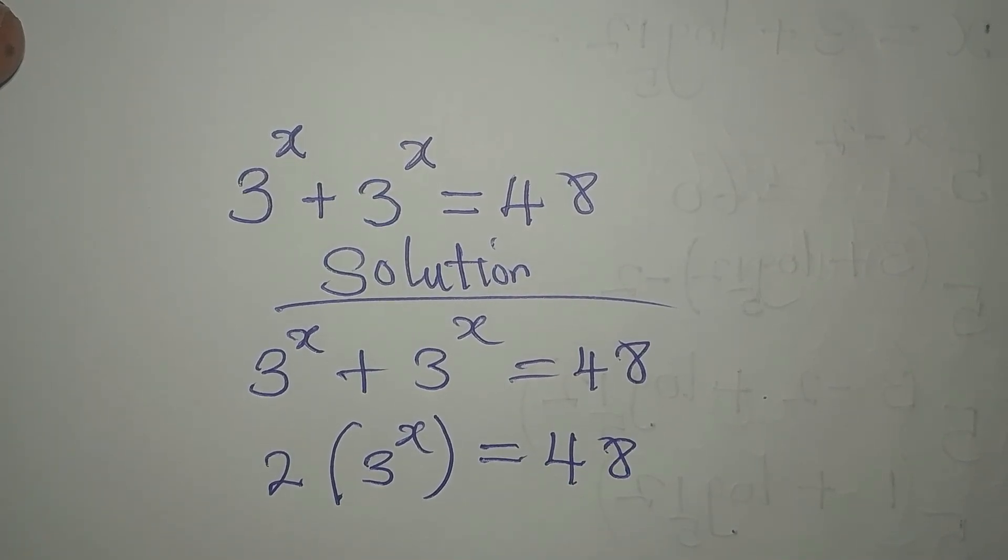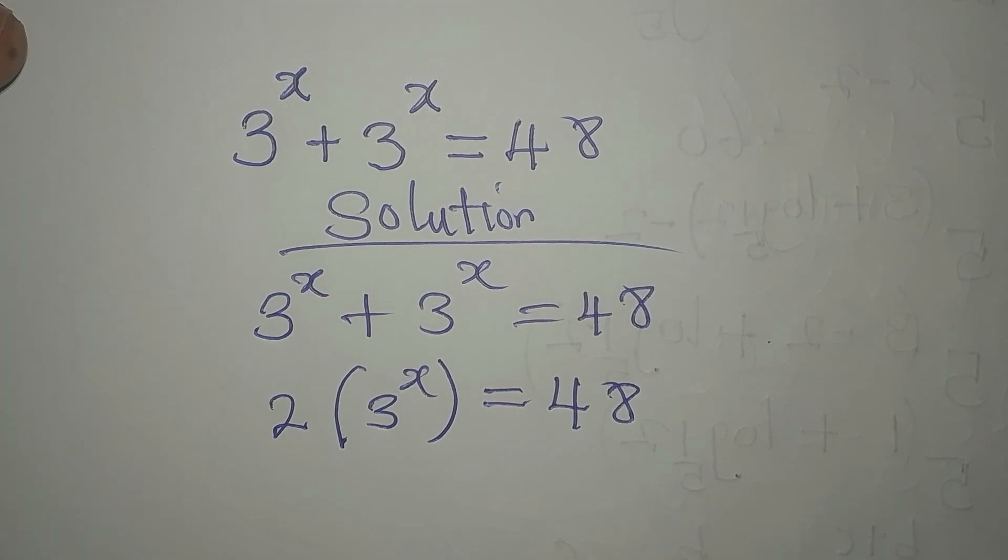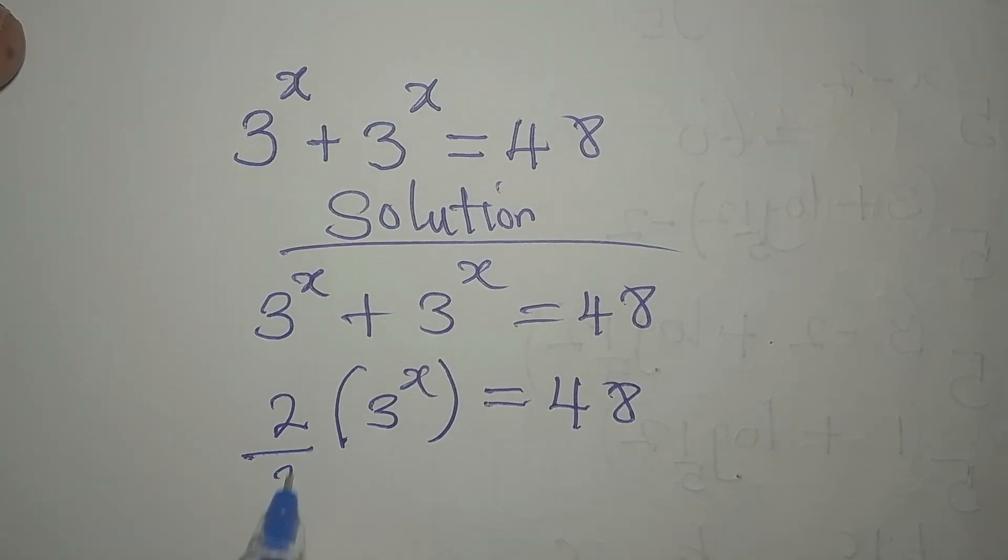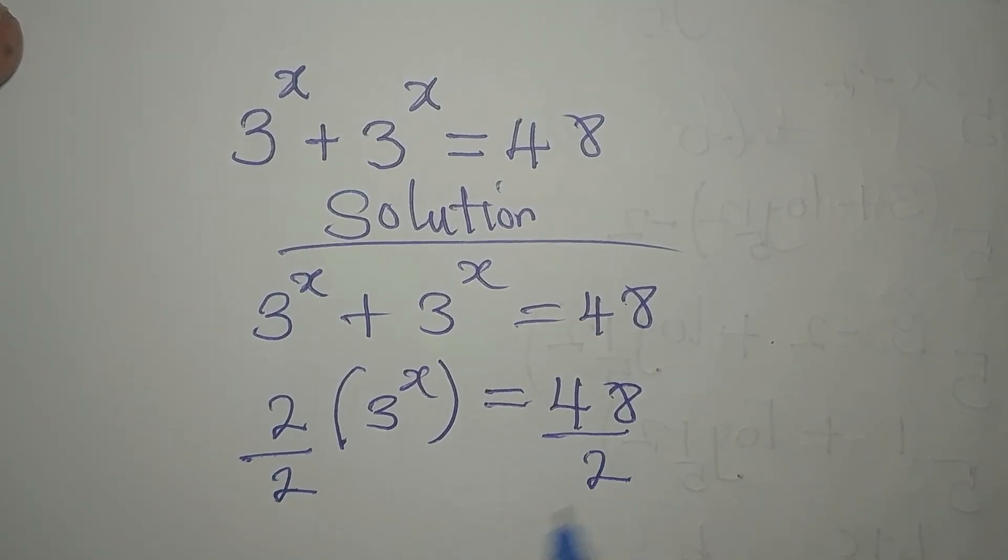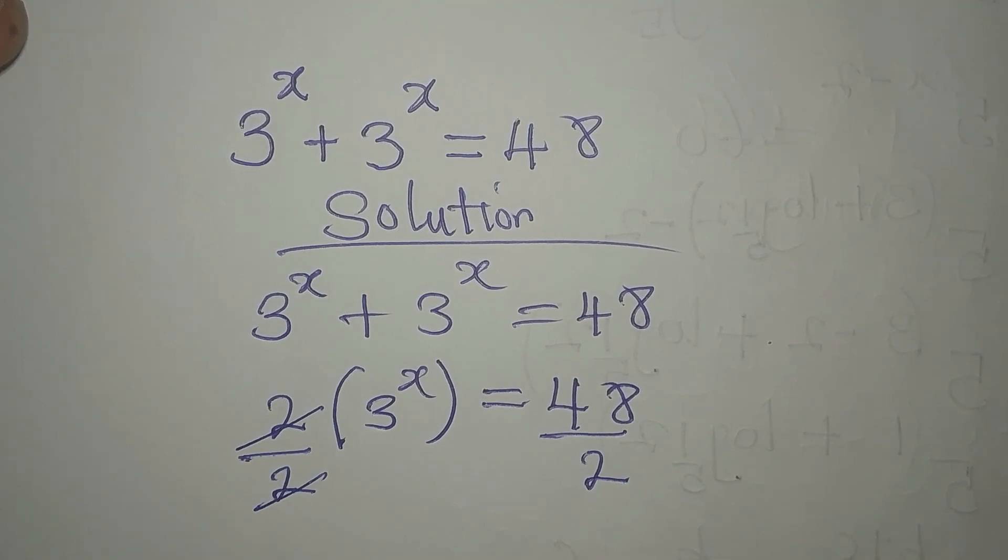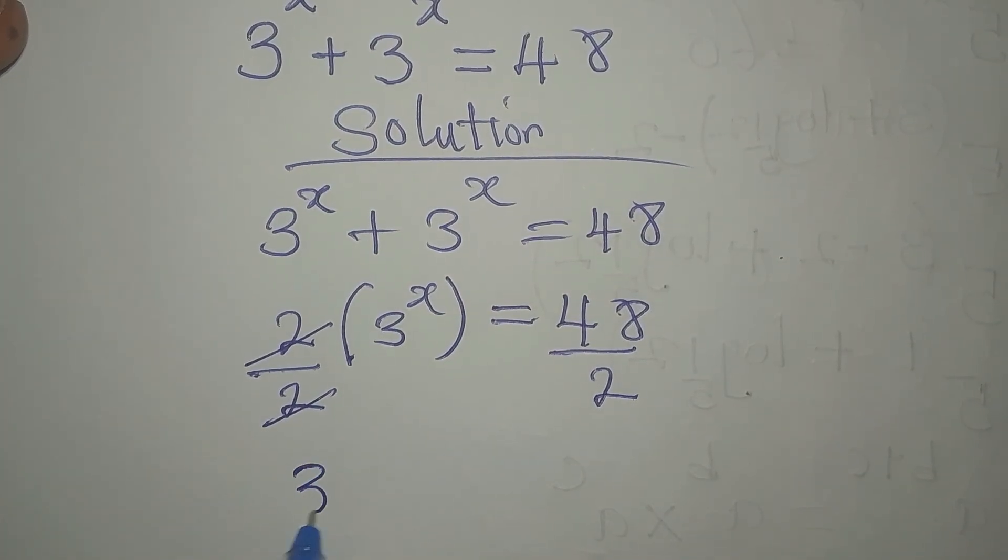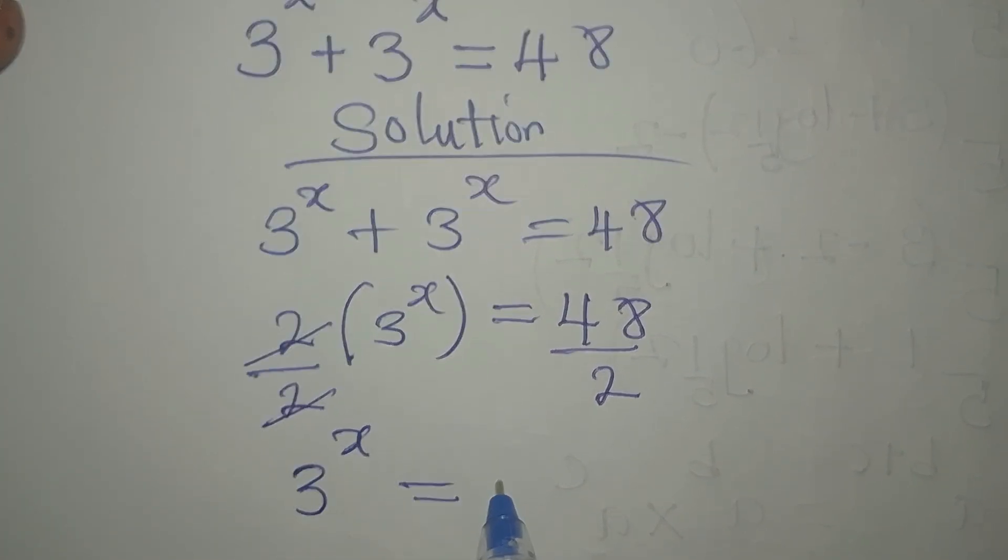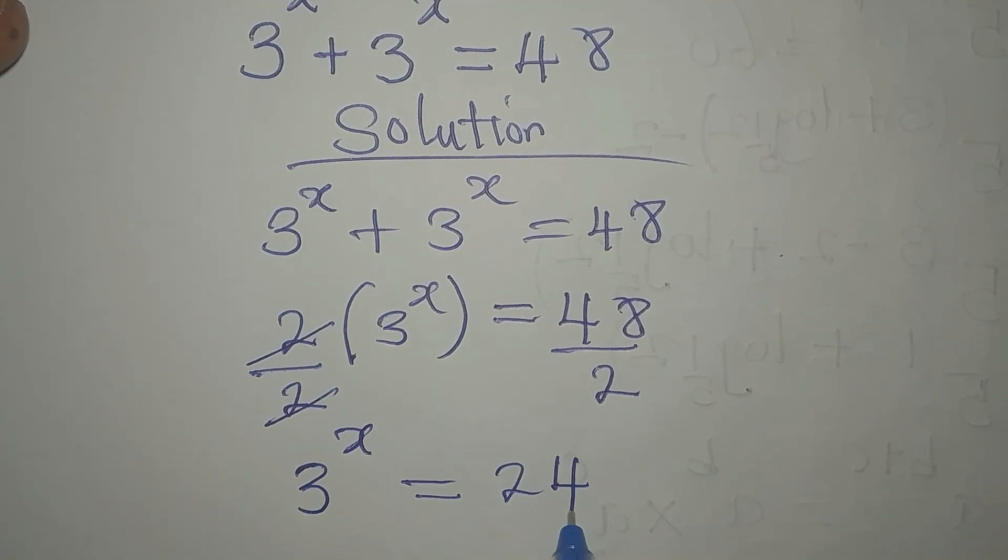This will divide itself so that 2 can go. Now we have 3 to the power of x to be equal to 24, that is 48 divided by 2.